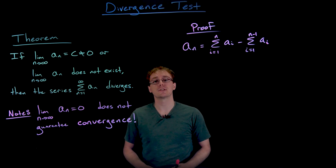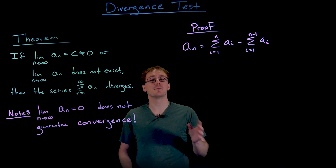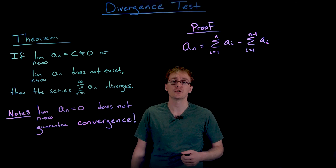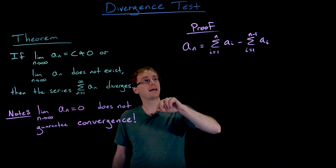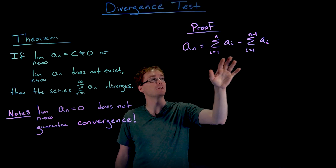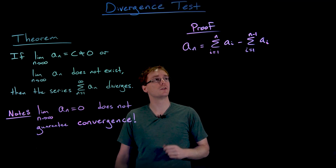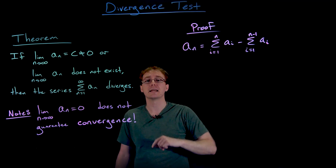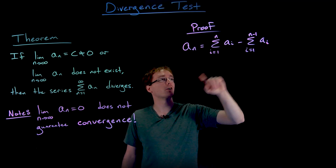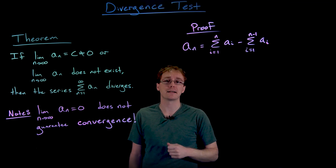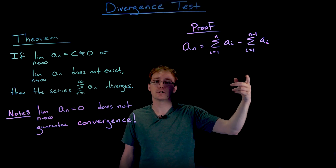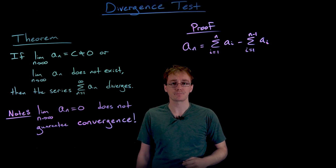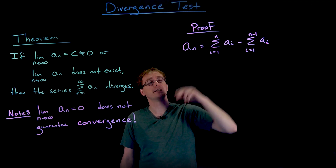Next we look at the proof of the divergence test. We start by remembering a useful trick: the general nth term a sub n can be found by taking the difference between two partial sums — the sum from i equals 1 to n of a sub i, minus the partial sum from i equals 1 to n minus 1 of a sub i. That second sum is the same as the first except it's missing that nth term.